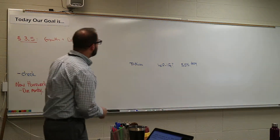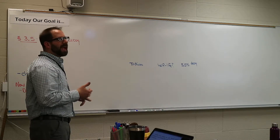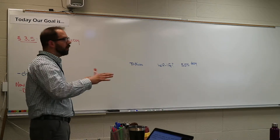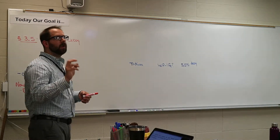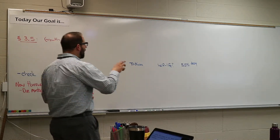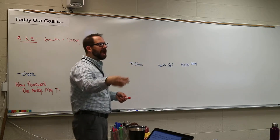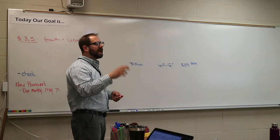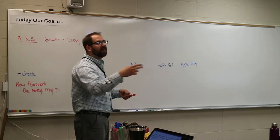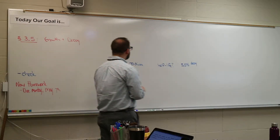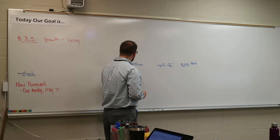First question talks about tritium. It wants to know the half-life of this particular substance. It tells you the decay rate, which is 5.5 percent. This is the formula we use for population growth or for half-life.